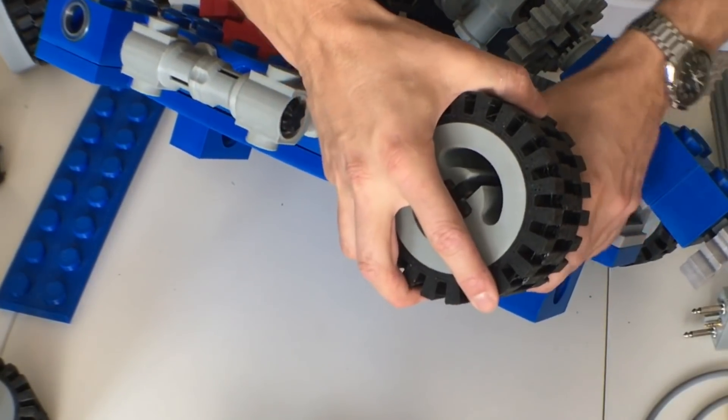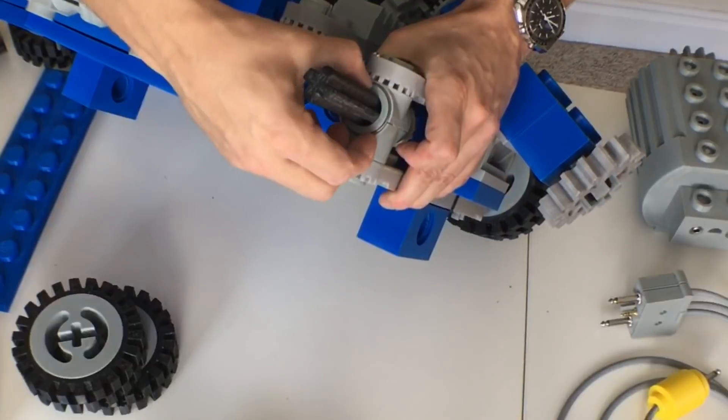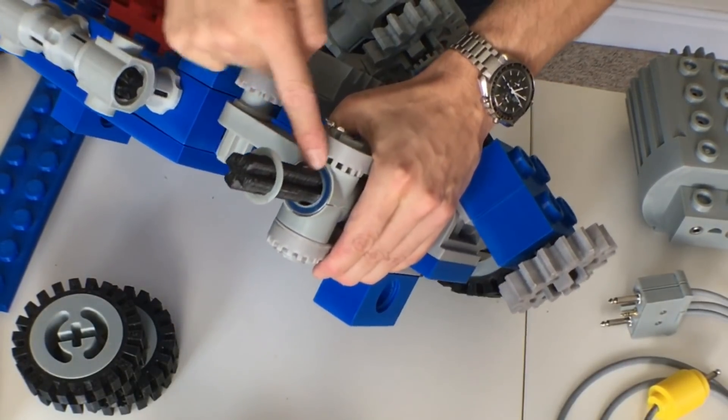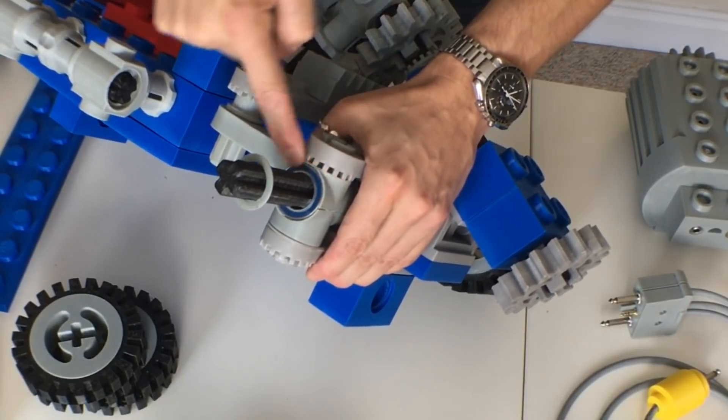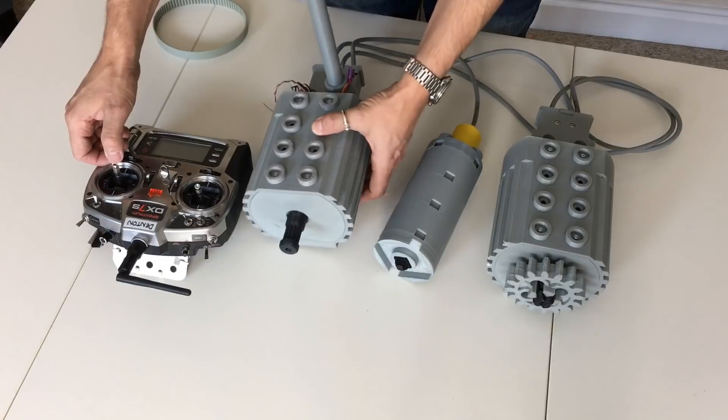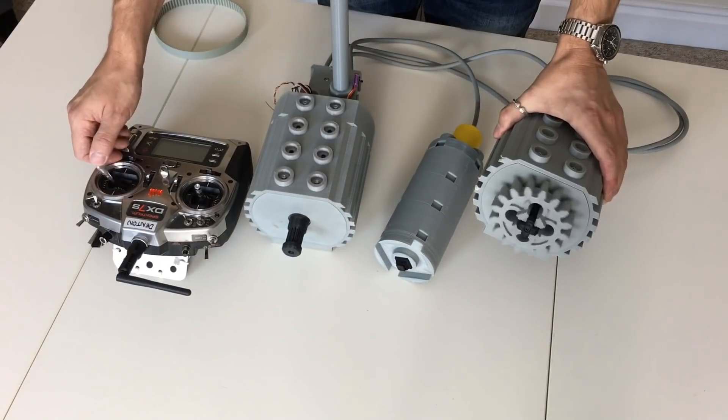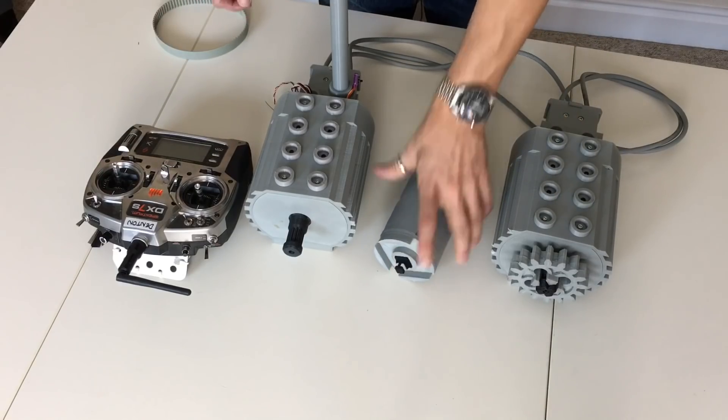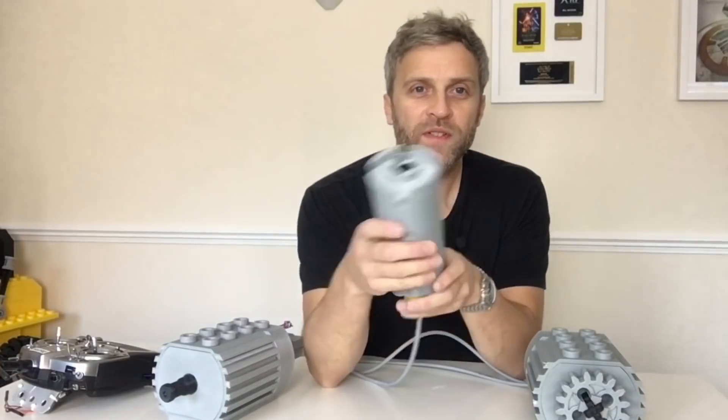I guess one other modification I did, if I take the front wheel off, I reprinted these front steering arms and they've also got bearings inside of them. There's the main drive motor, there's the steering motor.